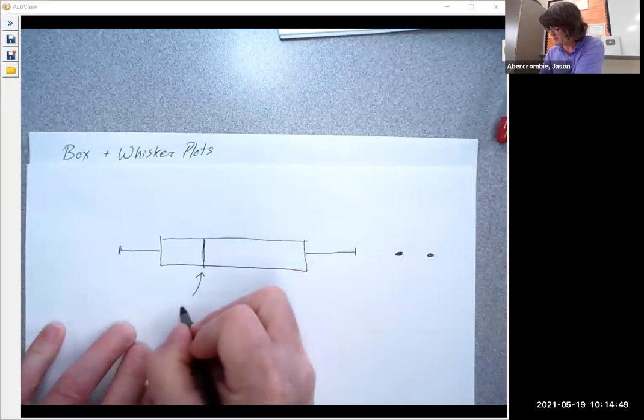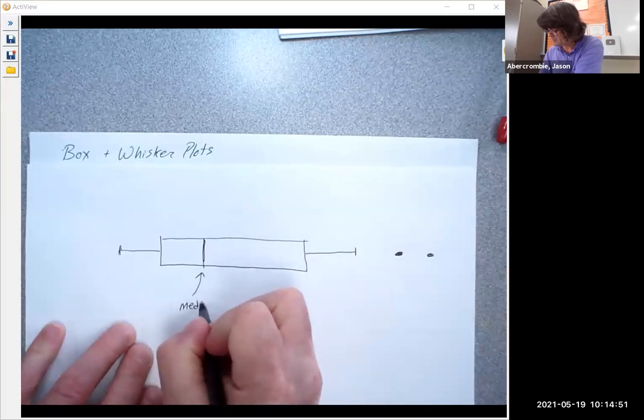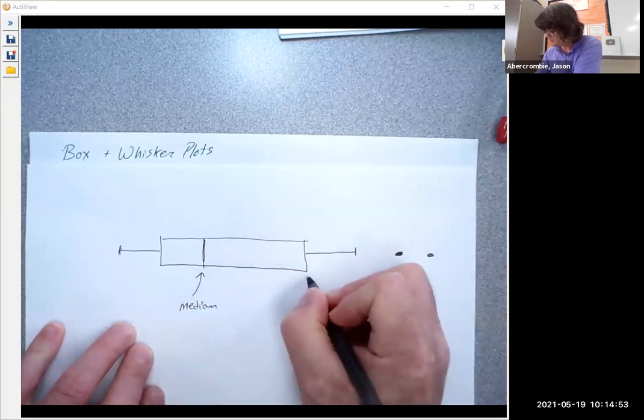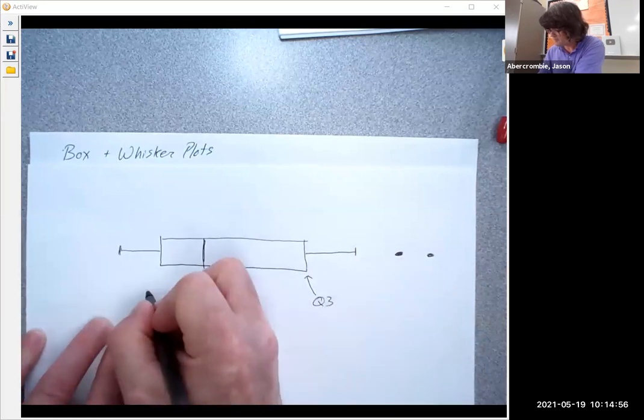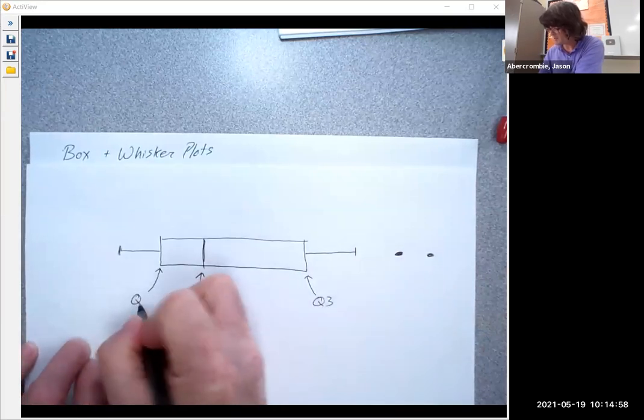So first of all, let me label everything. This is the median. This is called quartile three. This is called quartile one.